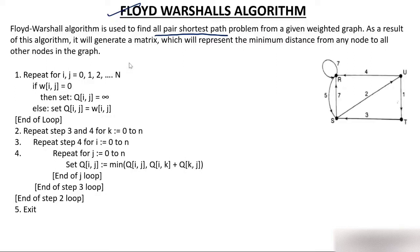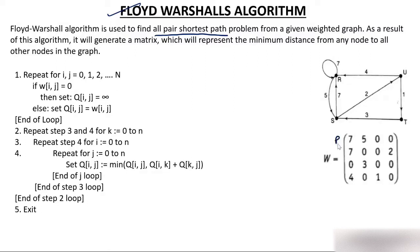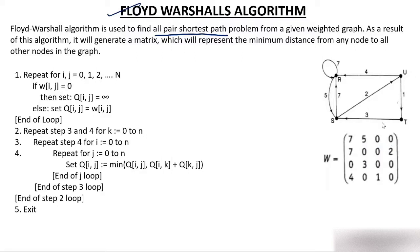This is the algorithm and this is the graph we discussed — we solved the question using this graph. First, I made a weighted matrix. This is R, S, T, U on both axes. I put the weight: is there a path from R to R? Yes, it is 7. From R to S? Yes, it is 5. From R to T? No direct path, so I put 0. From R to U? No path from R to U, so I put 0. Similarly, you insert the other elements. This is what the weighted matrix is all about.